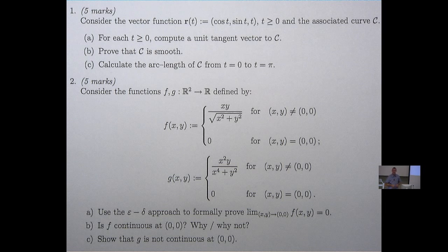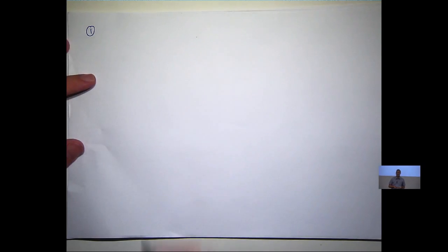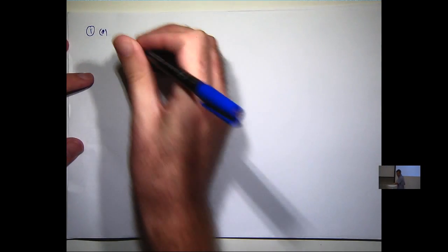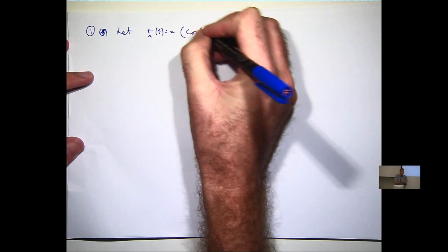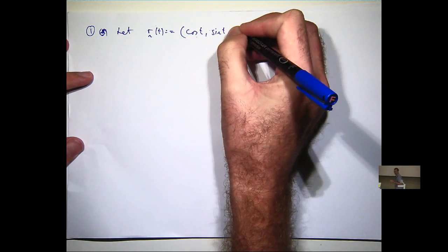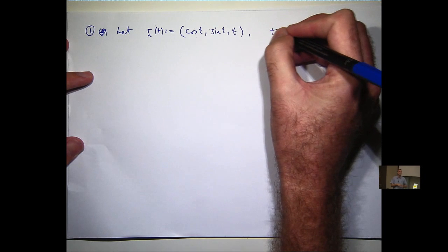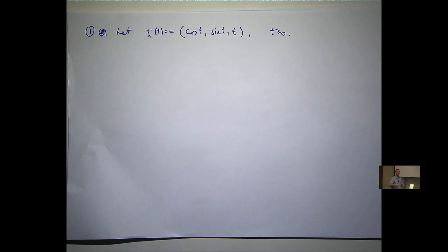So let's have a look. Here's our vector function. So firstly, what is the curve associated with this function? Anyone know? If I was asked to sketch it, what would it be? A spiral, or a helix, or a spring, a coil, whatever you want to call it. So let's just recognize that.